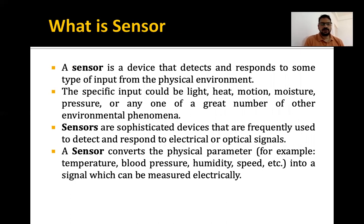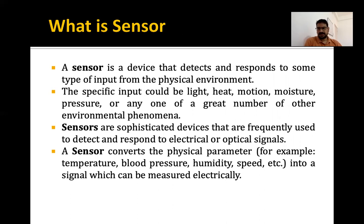Let's talk about the components of IoT. In the physical layer, or the very bottom layer of IoT, it is nothing but a wireless sensor network where we have sensors used to generate data. These sensors are attached to a microcontroller or microprocessor, and there are actuators which give movement to objects. So let's talk about sensors and actuators.